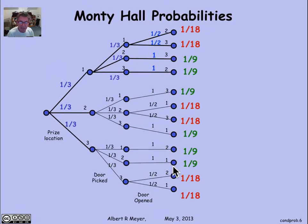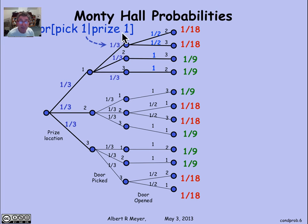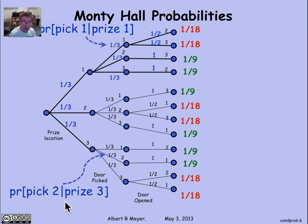Let's do another example. Let's go back to Monty Hall. Remember the probability labels on the branches. The 1/3 here is where the prize is at location 1 and the contestant has picked door 1. We figured out that wherever the prize is, the probability the contestant will pick door 1 is 1/3. This 1/3 is the probability the contestant will pick 1 given that the prize is at door 1. Similarly, there's another 1/3 — the probability the contestant will pick door 2 given that the prize is at door 3.